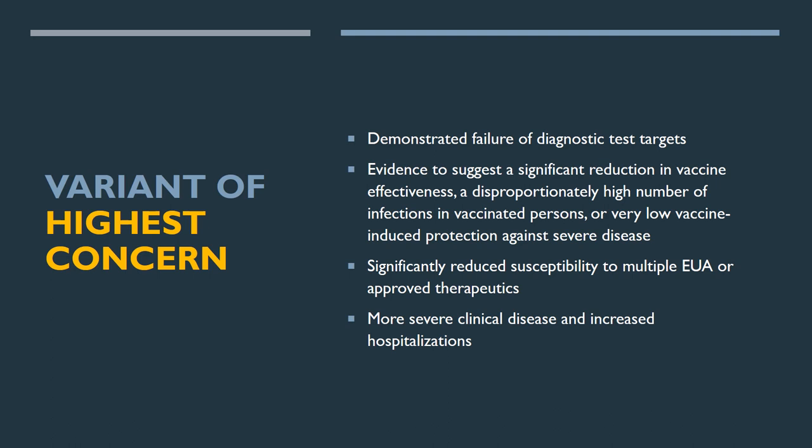And then you have the variants of highest concern. That is why you have certain variants classified as alpha, beta, delta and so on and so forth because they are causing severe mortality and morbidity in the public health system.